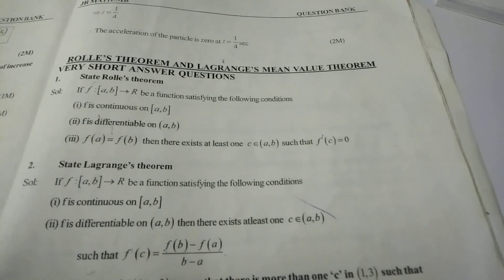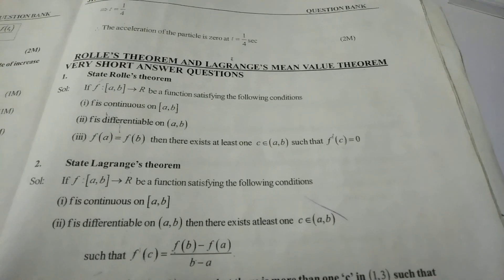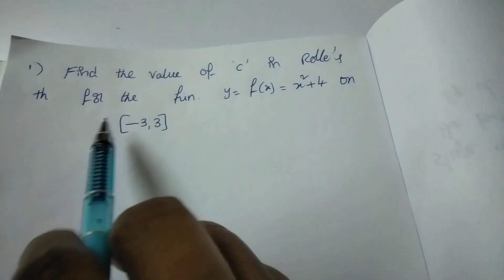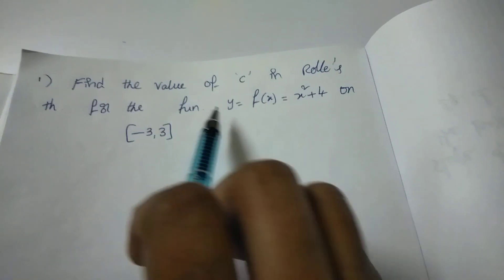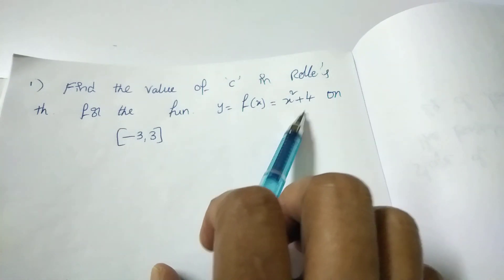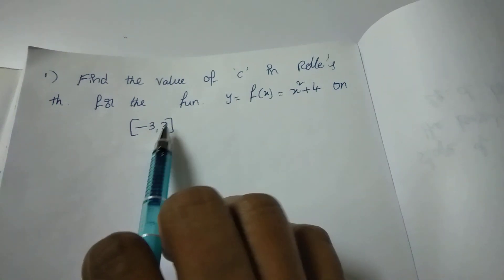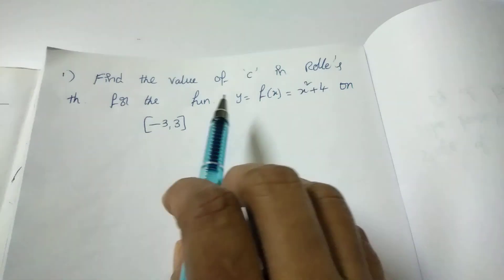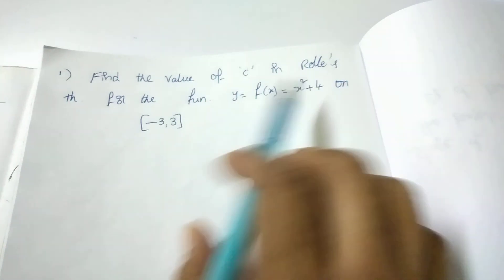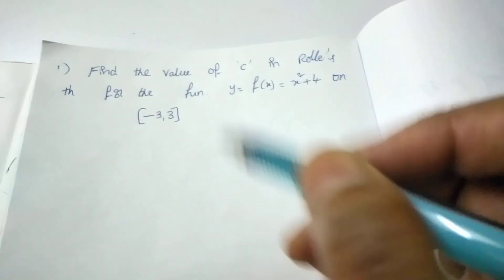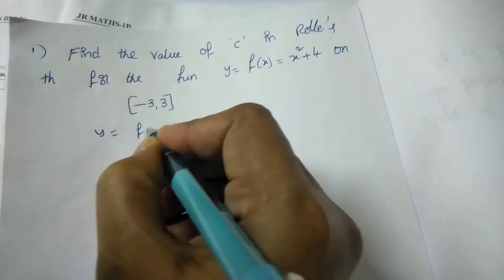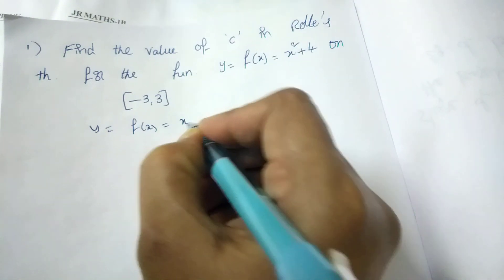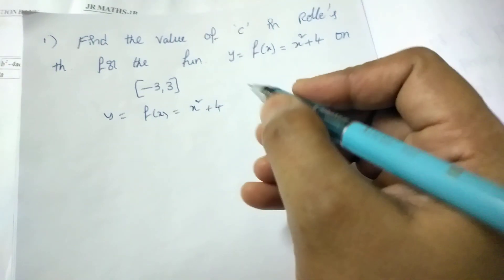Now let's discuss some questions. Find the value of c in Rolle's Theorem for the function y = f(x) = x² + 4 on [−3, 3]. Given: y = f(x) = x² + 4. This is a polynomial function.